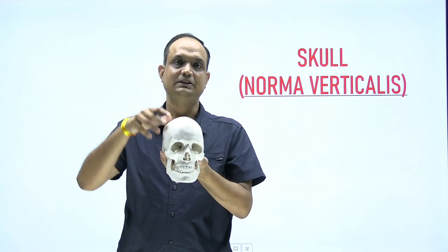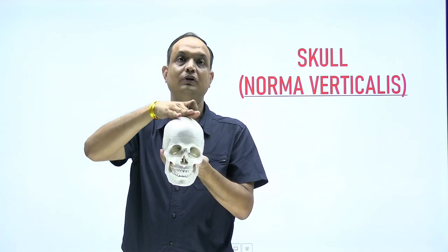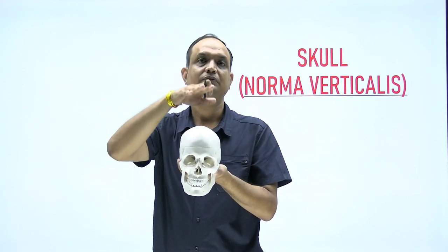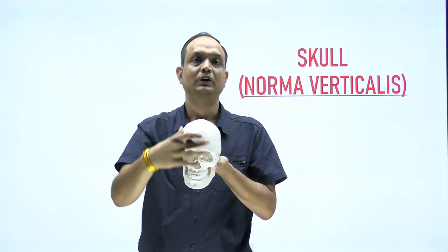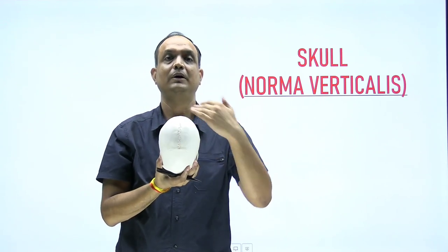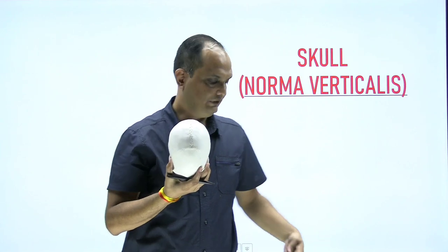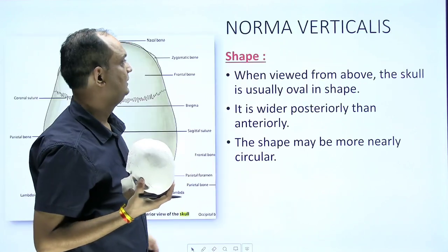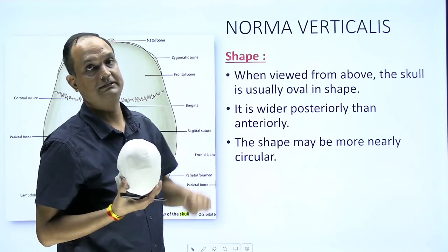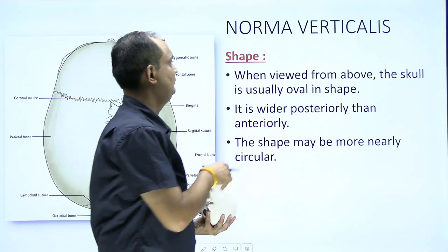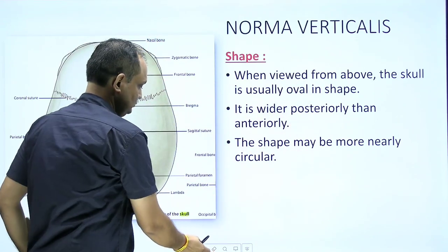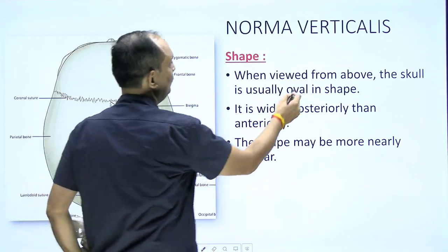In today's lecture, we are discussing the features of norma verticalis — that means, if you see the skull from above, what features you are able to appreciate. When you see the norma verticalis, the skull is usually oval in shape.